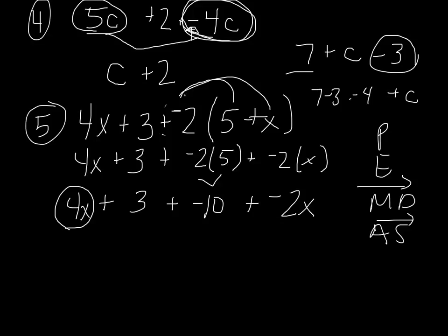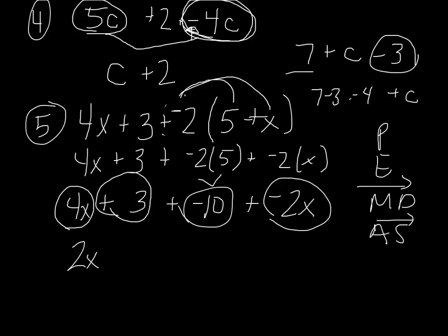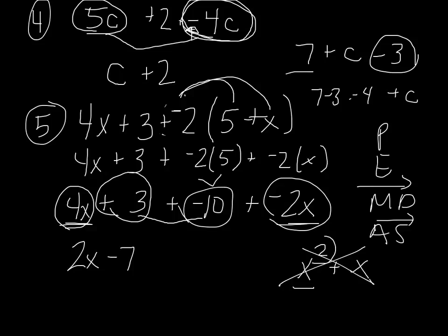Now I've got 4x and minus 2x, so 4x minus 2x would be 2x. Then I have a positive 3 and a negative 10. If I have $3 but I owe someone $10, I can give them 3 and still owe $7. So 3 plus negative 10 is negative 7. I combined those like terms because they don't have variables. I combined 4x and negative 2x because they both have an x with the same exponent — you cannot add x squared plus x.